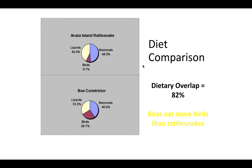If we look at the comparison in diet, they're pretty similar. The main difference is that the constrictor eats more birds than the rattlesnake. That's because the constrictor will eat anything — it's a generalist, so it'll eat anything. Whereas the rattlesnake is more of a specialist.